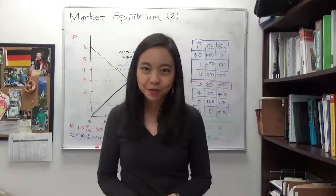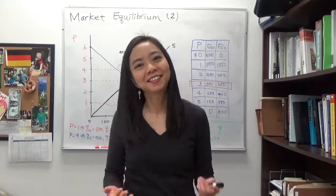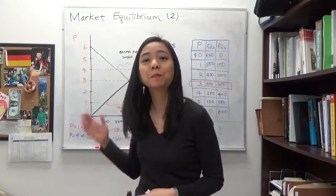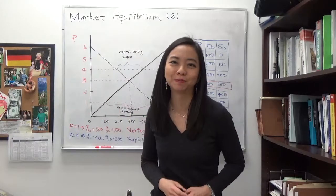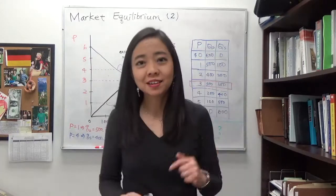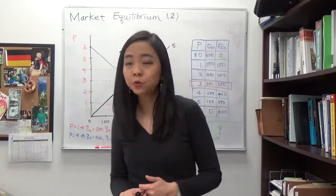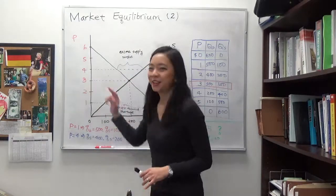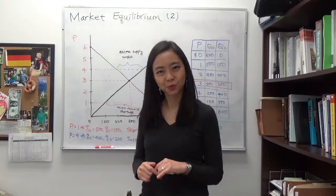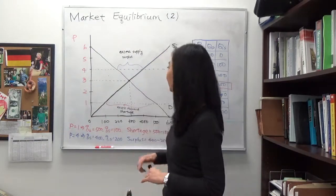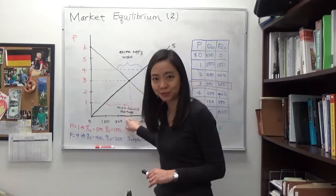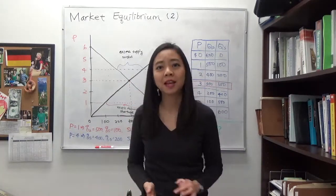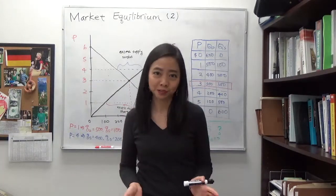Hello everyone, my name is Iris Franz and today we are going to continue to talk about market equilibrium. In the last video we talked about market equilibrium, and equilibrium price is the price where your quantity demanded is equal to quantity supplied. So there is no excess demand and there is no excess supply.